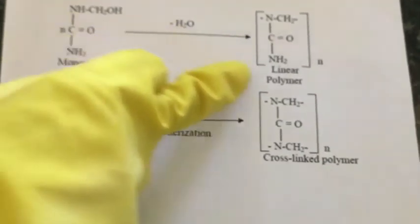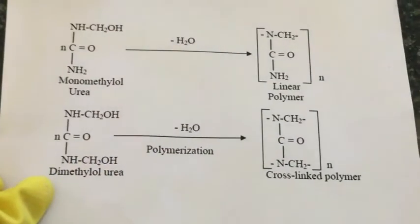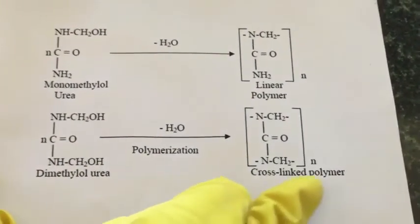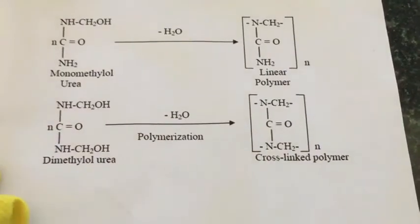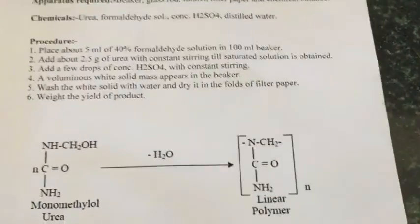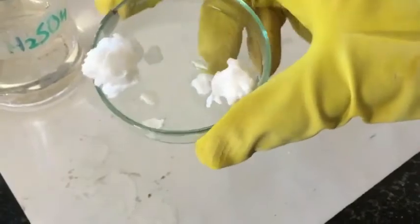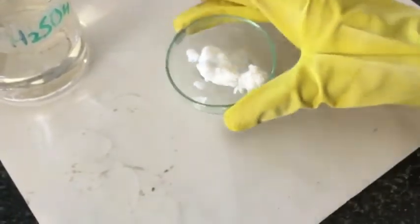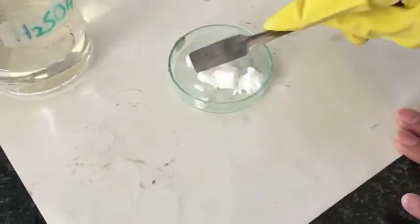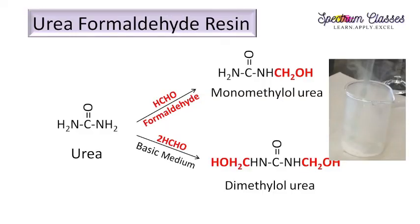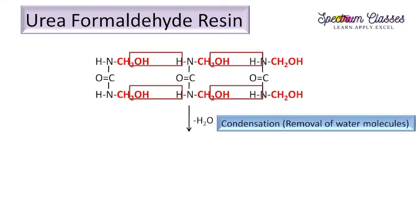Here I again show you the reaction. Monomethylol urea gives us a linear polymer, and dimethylol urea gives us a cross-linked polymer. Here is the product — it is very beautiful. This is a two-step reaction: the formation of methylol urea occurs in the basic medium, whereas this condensation process occurs in the acidic medium.